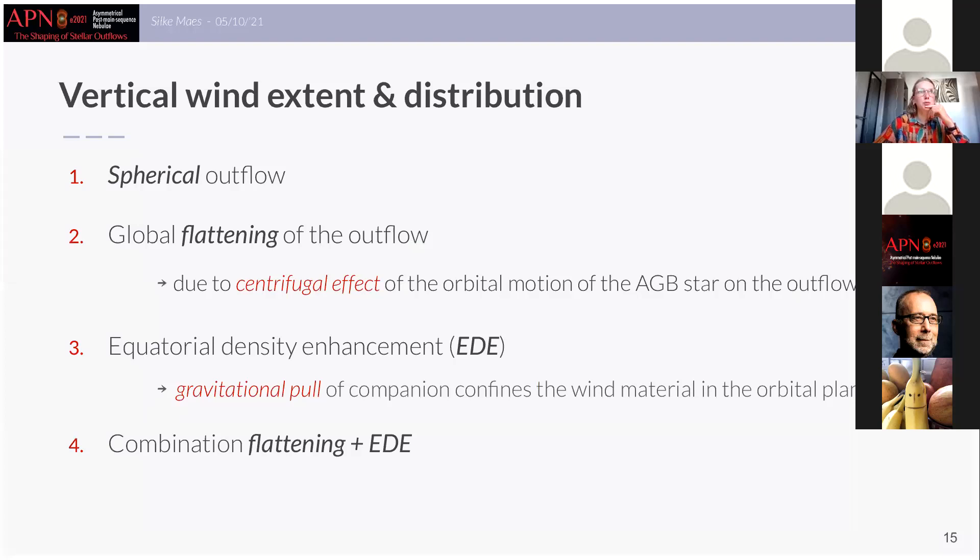So to recap we see four different signatures. First of all we have a global spherical outflow by which I mean that the material reaches all longitudes and latitudes. Then the second model shows what we have called a flattening and this is actually the result of the centrifugal effect of the orbital motion of the HB star induced by the companion and this effect was already established previously by Kim and Tam in 2011.